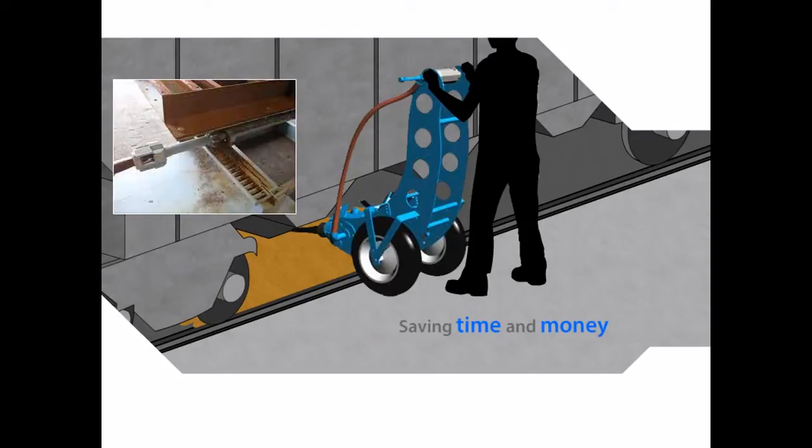After the car is unloaded, the operator simply sets the device in reverse, depresses the throttle, closing the gate.